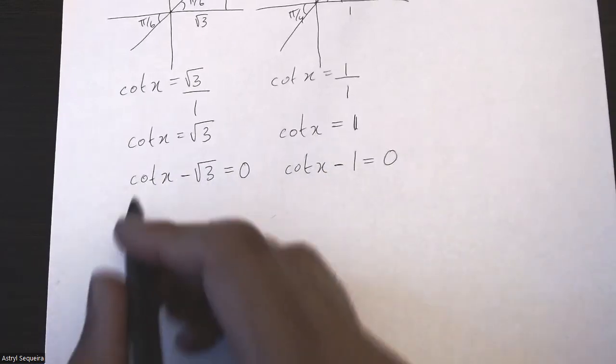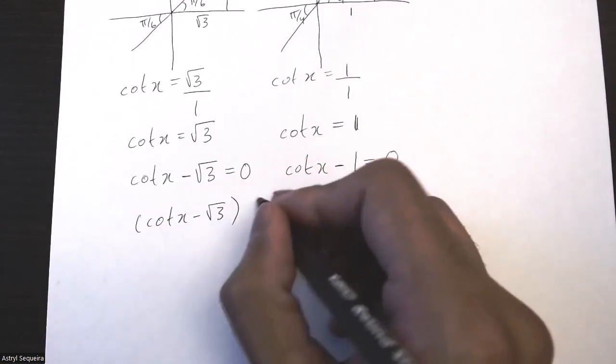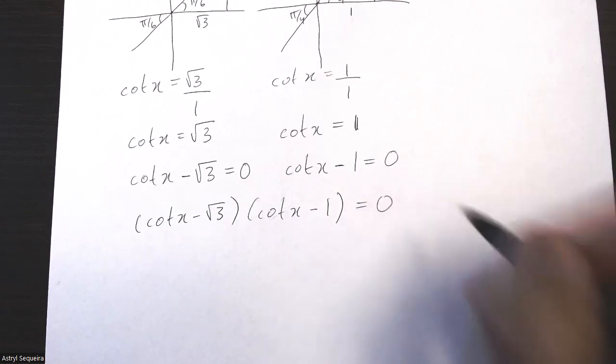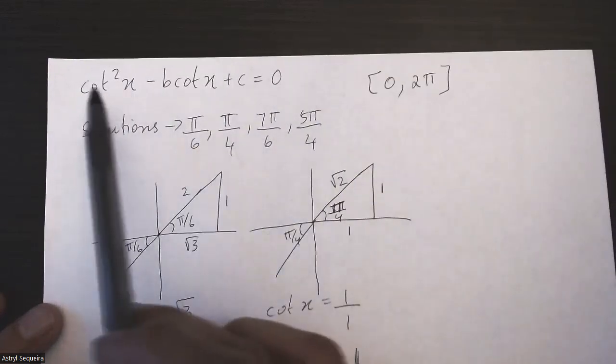So if I multiply them out, cot x minus √3 times cot x minus 1, and make this equal to 0, this is equivalent to the original equation.